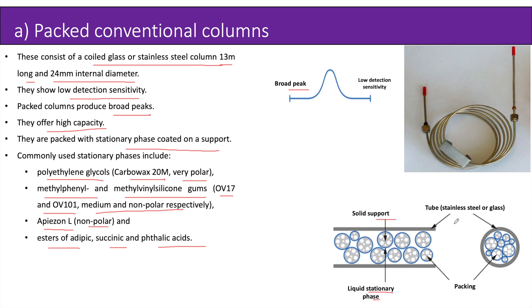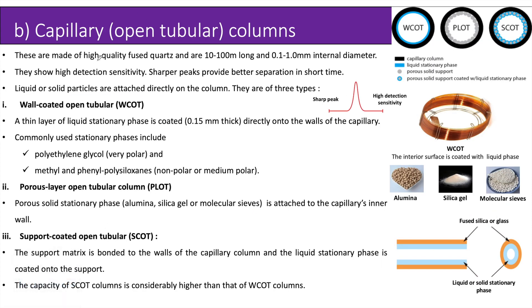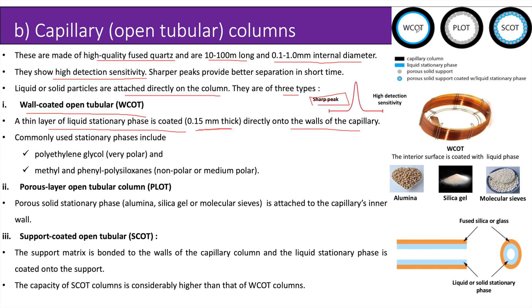To summarize, packed columns usually contain a liquid stationary phase coated onto a solid support, packed into a tube made of stainless steel or glass. Capillary or open tubular columns are made of high quality fused silica, 10 to 100 meters long and 0.1 to 1 millimeter internal diameter. They show high detection sensitivity, sharper peaks, and provide better separation in short time. There are three types. First is the wall coated open tubular (WCOT), where a thin layer of liquid stationary phase about 0.15 millimeter thick is coated directly onto the walls of the capillary. Commonly used stationary phases include polyethylene glycol (very polar) and methyl and phenyl polysiloxanes (non-polar or medium polar).